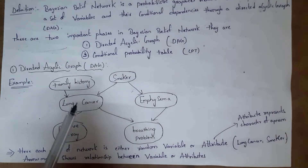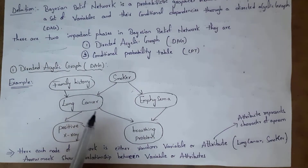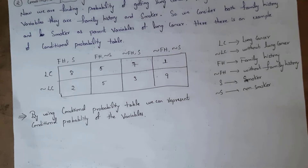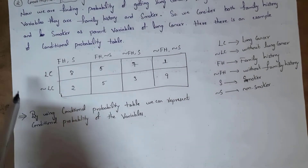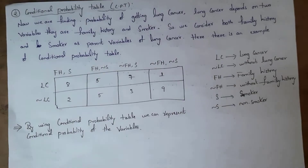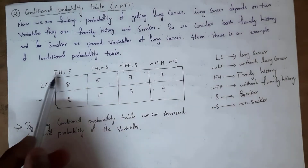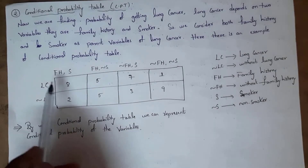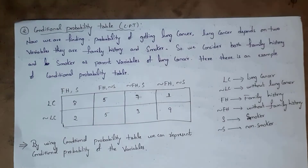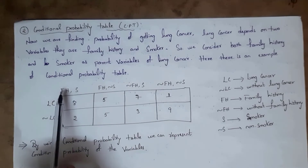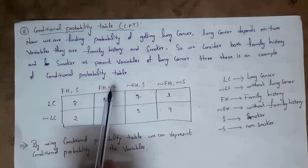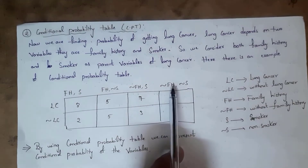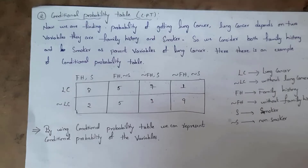To find the probability of getting lung cancer, we use a Conditional Probability Table. In this table, LC represents lung cancer and negation LC represents not getting lung cancer. Since lung cancer depends on family history and smoker, we consider four possibilities: family history and smoker, family history and non-smoker, no family history and smoker, and no family history and non-smoker.